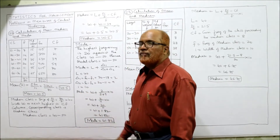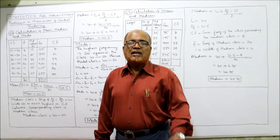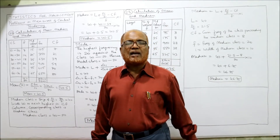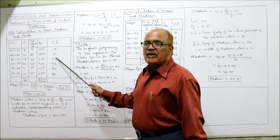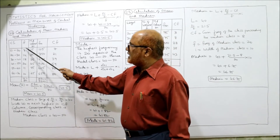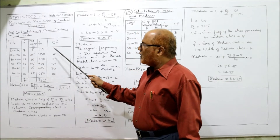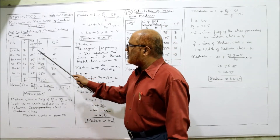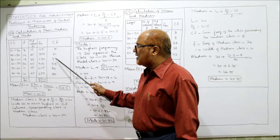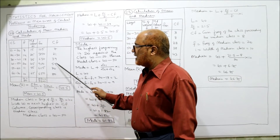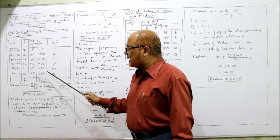One more column we require is the cumulative frequency (cf), which we need for calculating the median. The first frequency is 7, so cf is also 7. Then: 7+14 = 21, 21+18 = 39, 39+20 = 59, 59+11 = 70, 70+10 = 80.